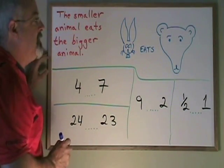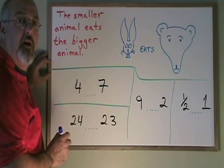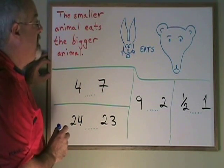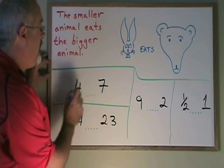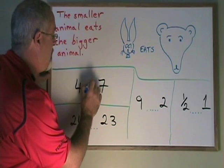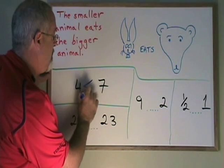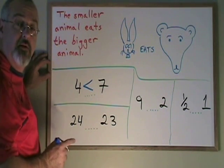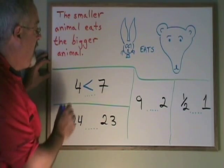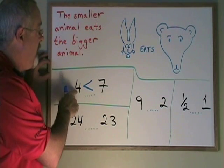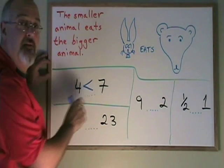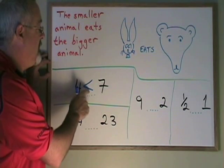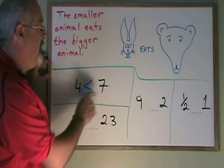Let's look at what this looks like when we're applying our less than and greater than symbols. Because if you put a less than symbol here, 4 is less than 7, which is true. It looks like the 4 is eating the 7. The smaller animal is eating the bigger animal.